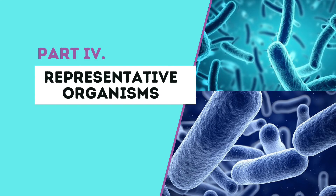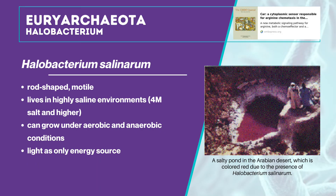We will now move to the representative organisms of Archaea. Halobacterium salinarum is rod-shaped, motile, and lives in highly saline environments of 4 molar salt and higher, and is one of the few species that can live in saturated salt solutions. It can grow under aerobic and anaerobic conditions, enabling it to take advantage of organic matter that accrues as saline water evaporates. It can live with light as its only energy source due to the activity of bacteriorhodopsin, a light-driven proton pump. Their mass cultures can be recognized by their typical red color, which originates from bacterioruberins.